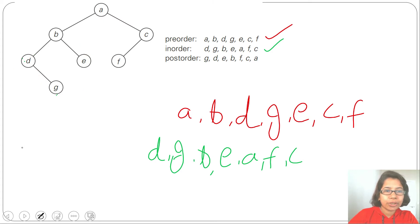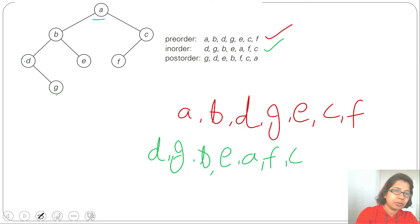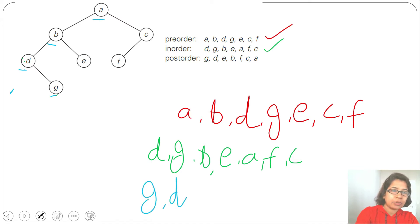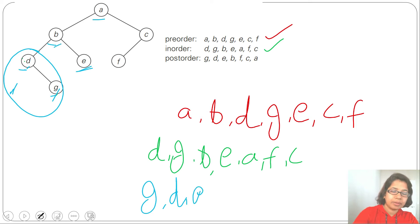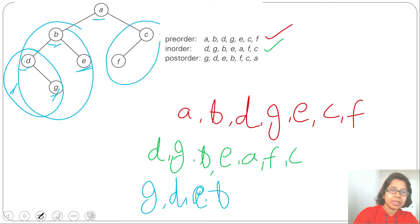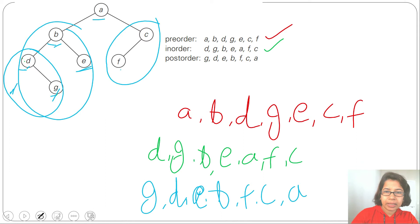Post-order means left, right, root. We go to the extreme left. Left has no child, so we visit right child G, then D. Left part done; visit right child E, then B. Left subtree complete. In the right subtree, left is F, no right child, so we visit C, then root A. Post-order traversal: G, D, E, B, F, C, A.